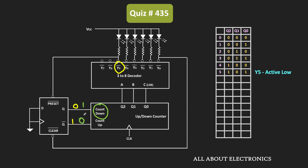So from the next clock onwards, the counter will count in the downward direction. From 101, it will go to 100, then to 011, and in this way the counter will count down to 000. Once again, when the count of the counter becomes 000, this Y0 output will become low. And as soon as Y0 becomes low, it will generate the clear input for the flip-flop, so Q becomes 0 and Q-bar becomes 1. That means from 000, it will once again count in the upward direction.